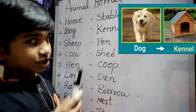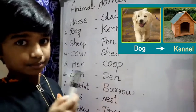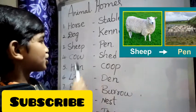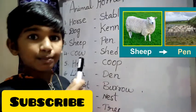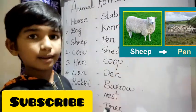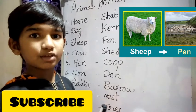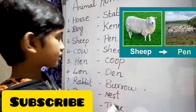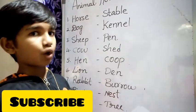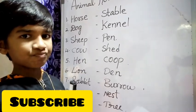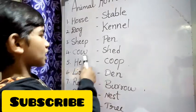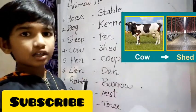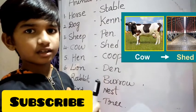Now next picture — what is that picture? Yes. Sheep. Sheep lives in a pen. Next picture — what is that picture? Yes. Cow. Cow lives in a shed.